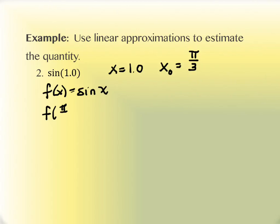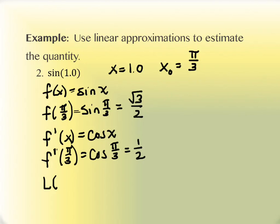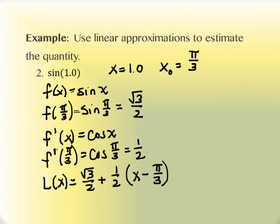We'll find f(π/3), which is sin(π/3). From the unit circle, sin(π/3) = √3/2. The second step is finding the derivative: the derivative of sine is cosine. Then we evaluate the derivative at π/3: cos(π/3) = 1/2. So our linear approximation model L(x) = √3/2 + (1/2)(x − π/3), where 1/2 is our slope and π/3 is the x₀ value.